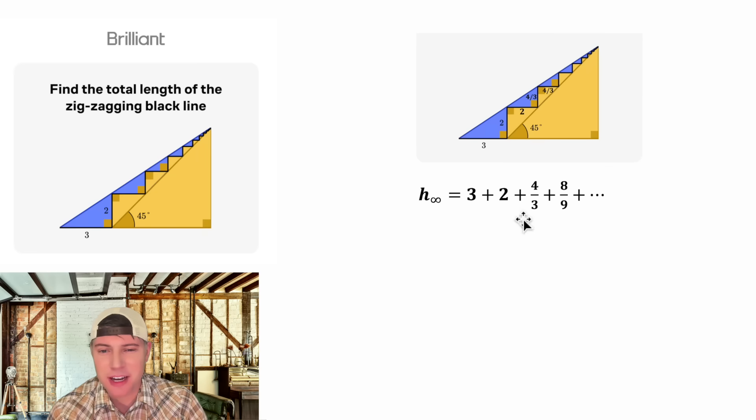To get from the first term to the second term we multiply by two-thirds. And then to get from here to here we multiply by two-thirds. And then we can multiply by two-thirds again to get eight-ninths. And this is going to continue forever. We're going to keep multiplying by two-thirds. That has a special name for this sum. We call it r for ratio. So the r of this sum is two-thirds.